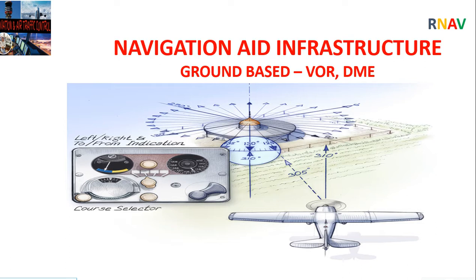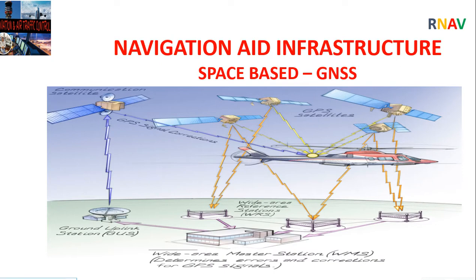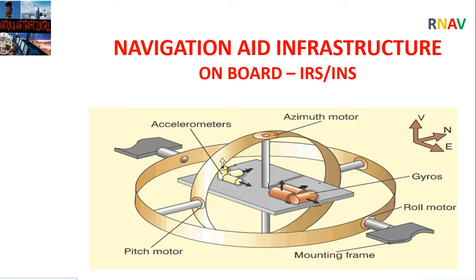Navigation aid infrastructure includes ground-based radio navigation aids — VOR and DME — located at specific aerodromes or en route, but these have coverage limitations. Space-based aids use the Global Navigation Satellite System (GNSS), a worldwide position, navigation, and time determination system including one or more satellite constellations, aircraft receivers, and system integrity monitoring. RAIM — Receiver Autonomous Integrity Monitoring — is a technology developed to assess the integrity of GPS signals. Aircraft on-board aids such as the Inertial Navigation System use a computer, accelerometers, and gyroscopes to continuously calculate position, orientation, and velocity by dead reckoning without external references.